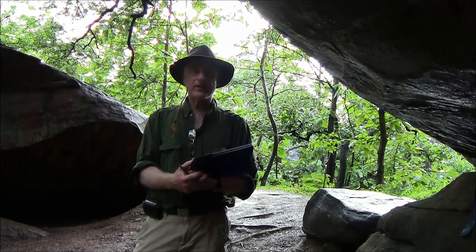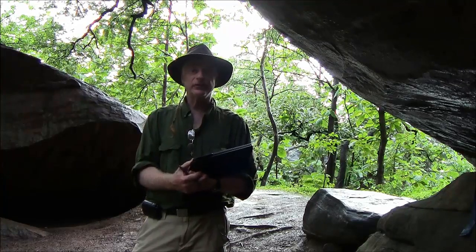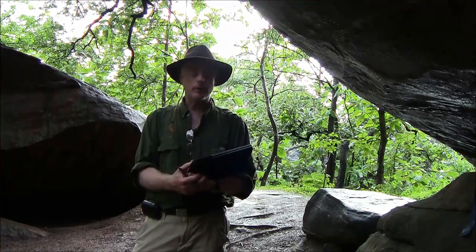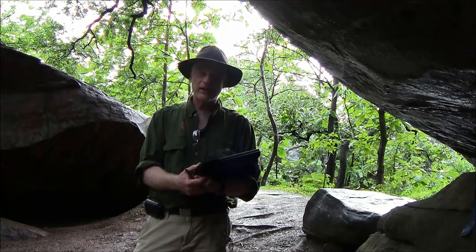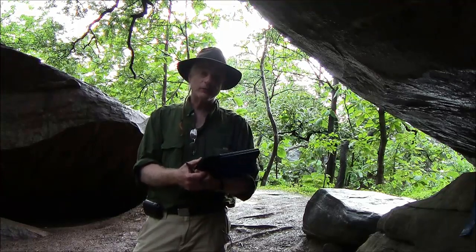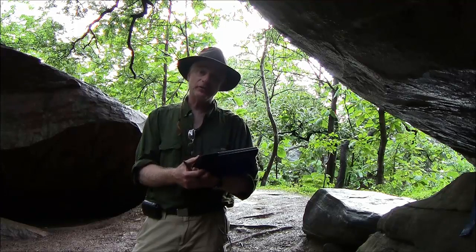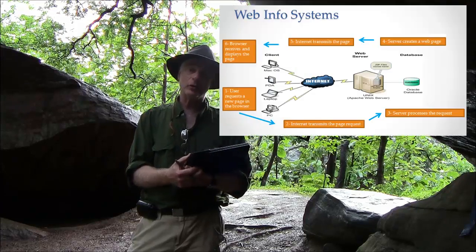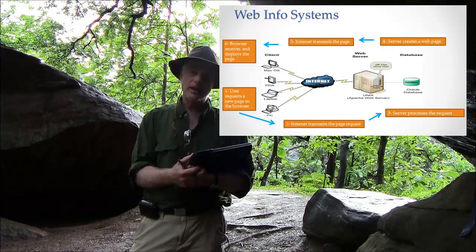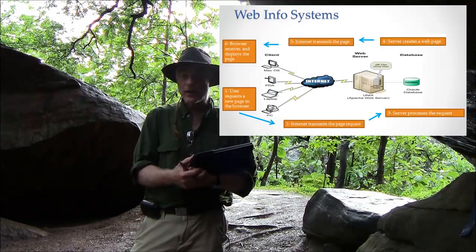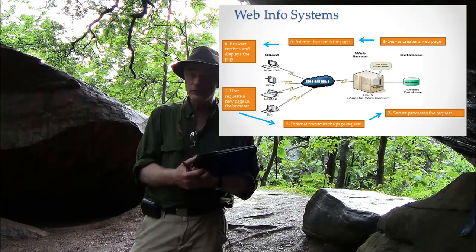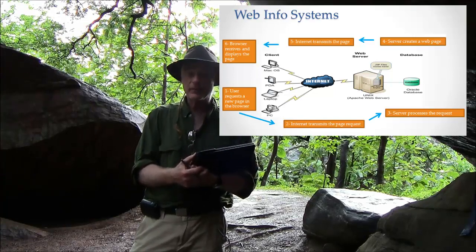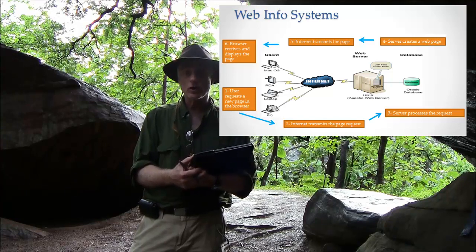Web information systems at the top level consist of three big parts: there's browsers, servers, and the internet that connects the two. A browser is a piece of software — an application that runs on your computer that allows you to access the internet. It runs locally, on your hard drive.